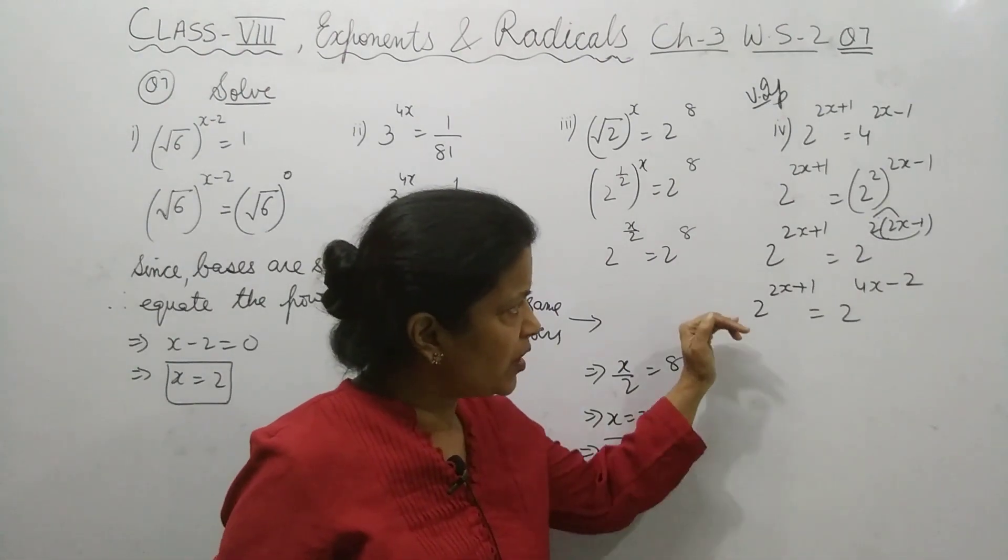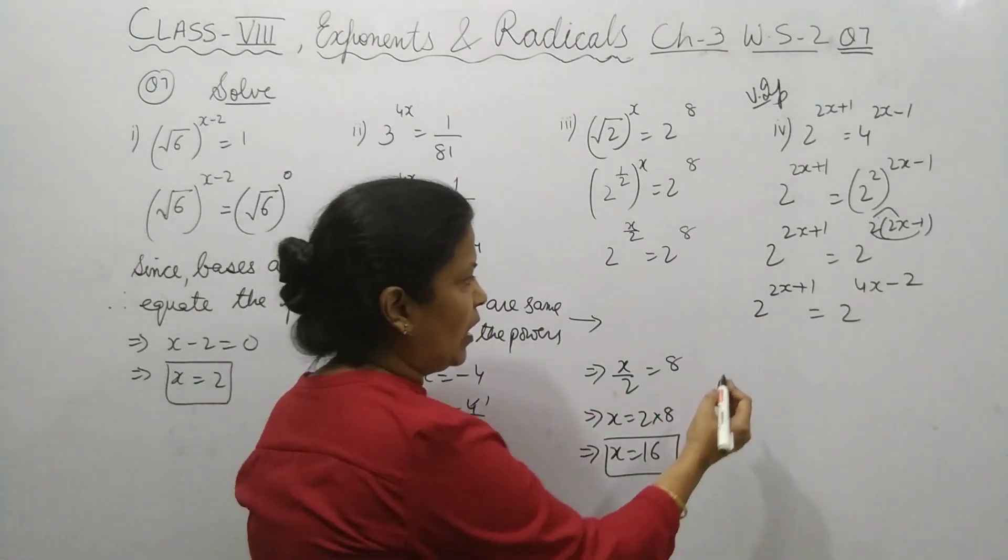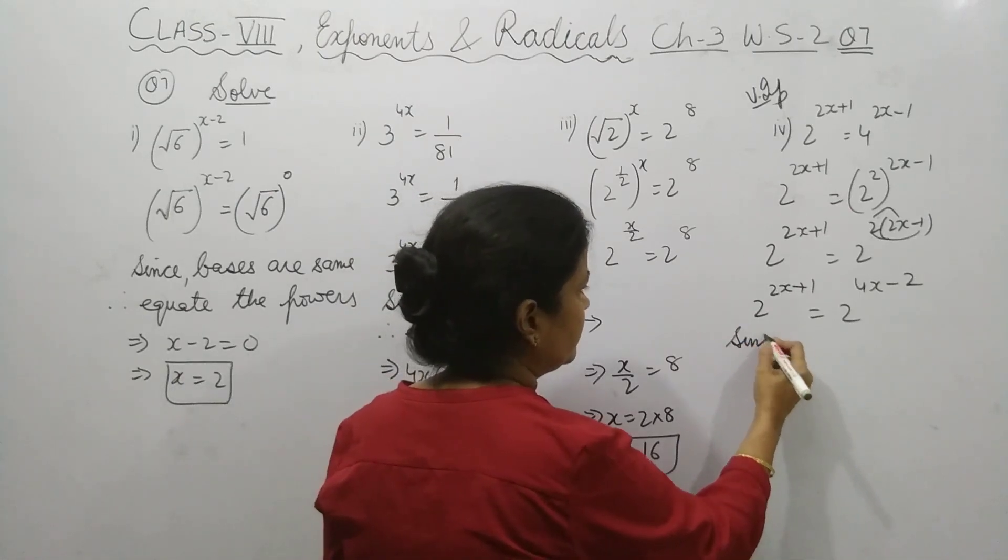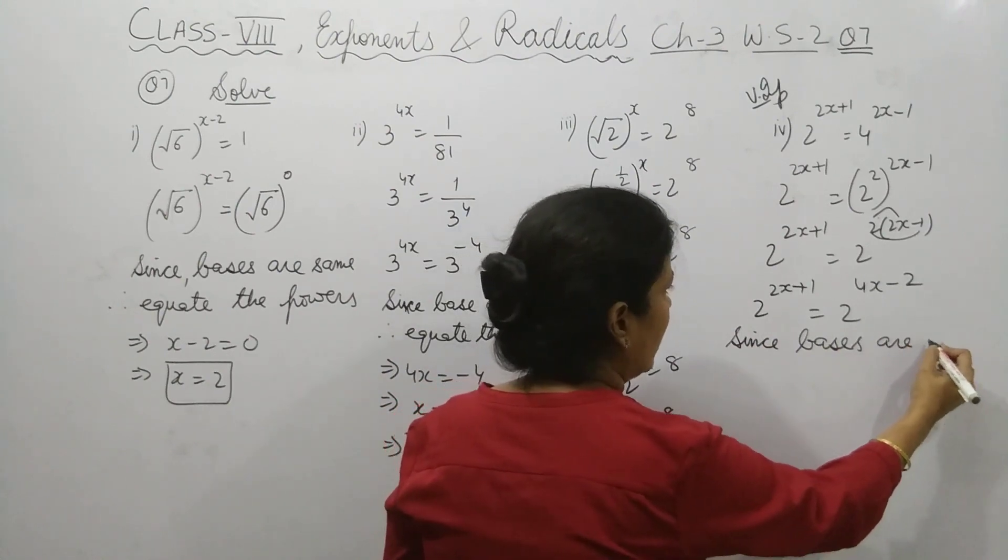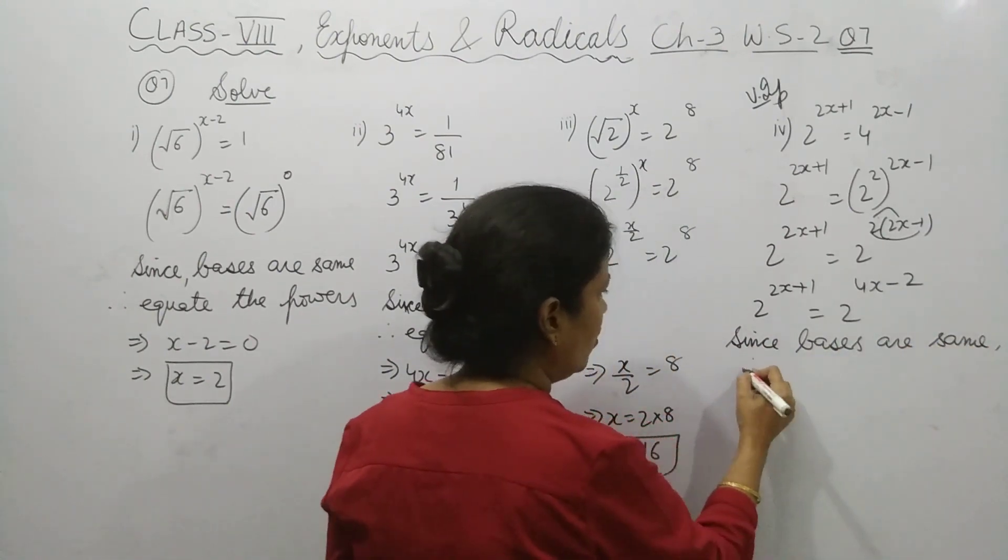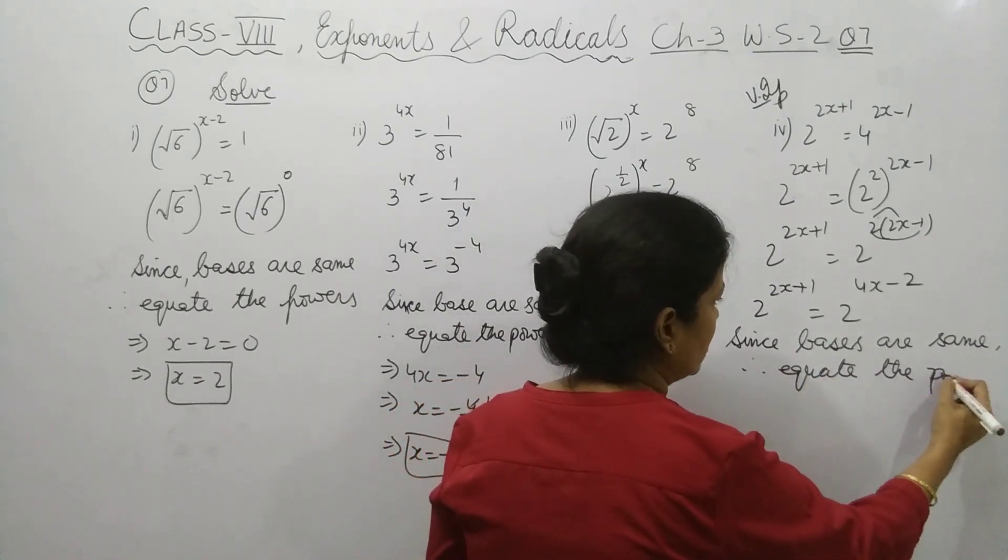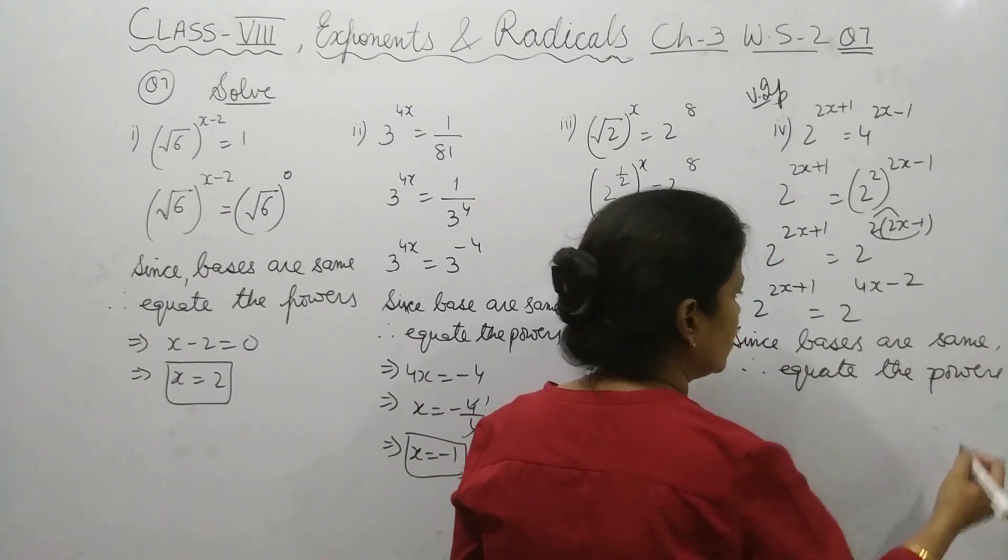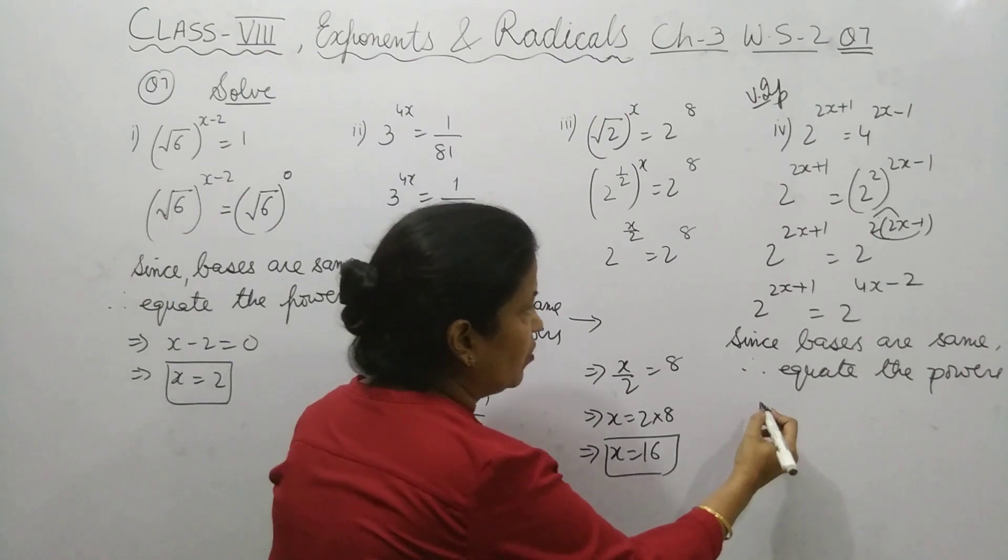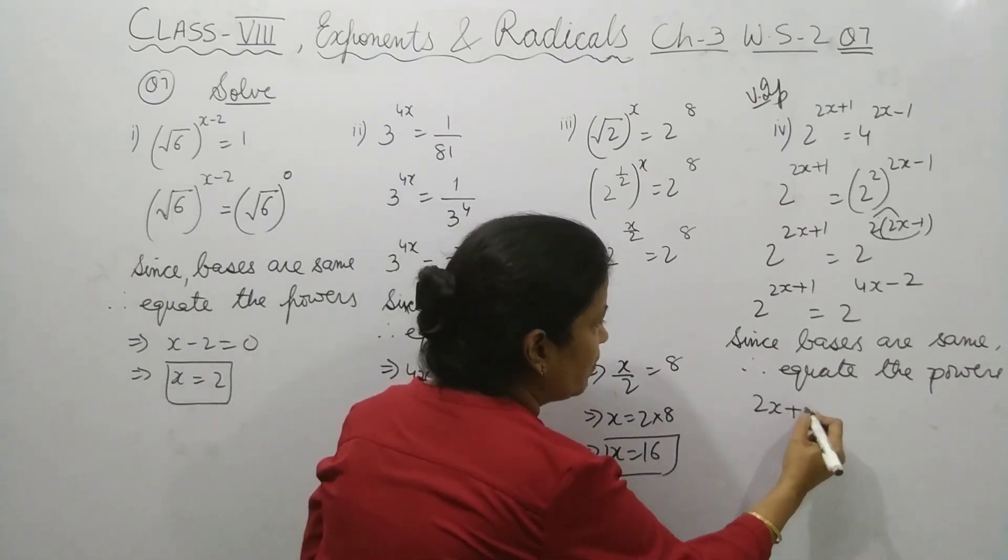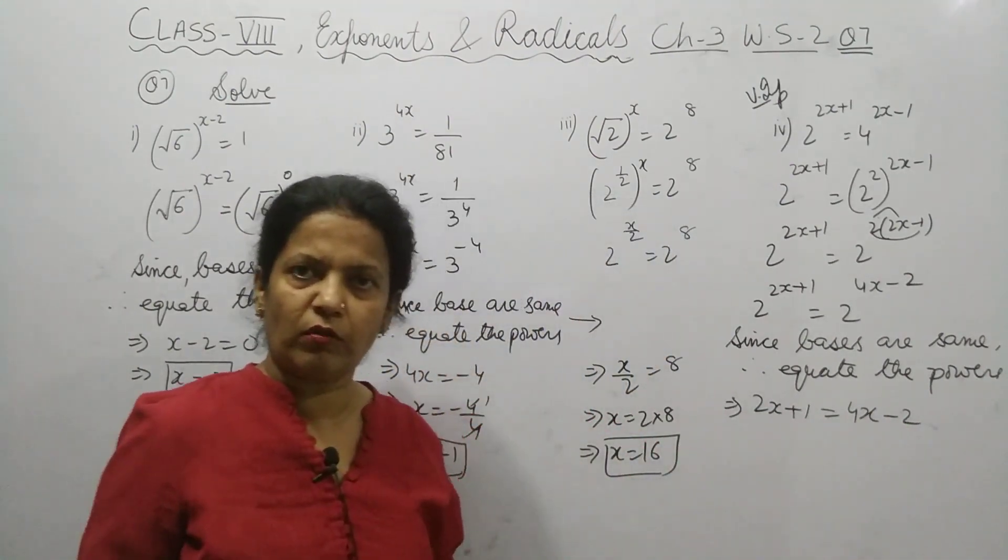Can you observe now the bases are same? So again you will write it: since bases are same, therefore equate the powers. Don't forget to write this statement. You have to write this statement. Equate the power: 2x plus 1 equal 4x minus 2.